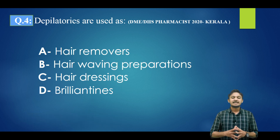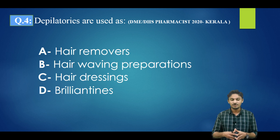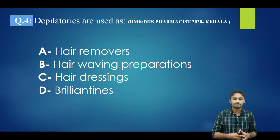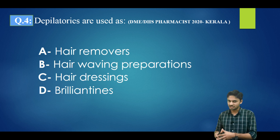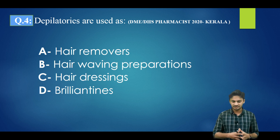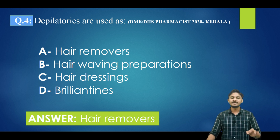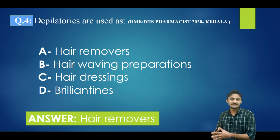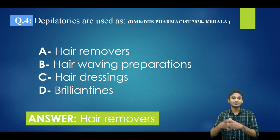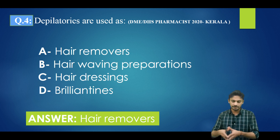Question number four: depilatories are used as — options are: hair removal, hair waving preparations, hair dressings, brilliantines. The correct answer is option A — depilatories are used as hair removers. Depilatories and epilatories are both used for hair removal purposes. Depilation and epilation are hair removal processes.